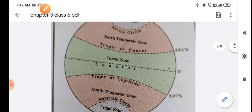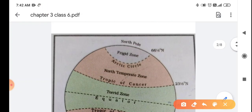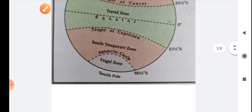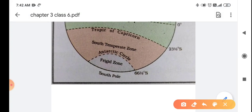And the last area which is the polar region between Arctic Circle and North Pole that is Frigid Zone. And same with the South. The area between Antarctic Circle and South Pole is Frigid Zone.